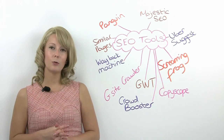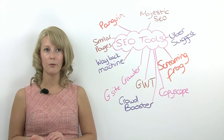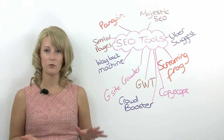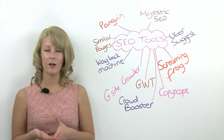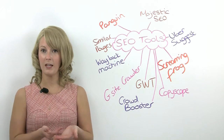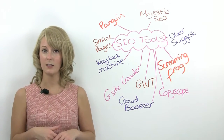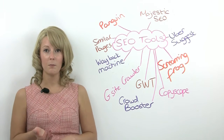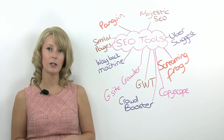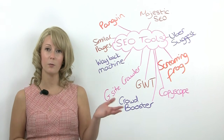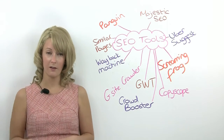Wayback Machine — this is a really cool tool if you've got a site and, for example, conversions have dropped just before you took it on. You need to think: has something on-page changed, but you don't know what the site looked like previously. You can use the Wayback Machine to look at a cached version of the site so you can see what it looked like previously and decipher whether something's changed which caused the drop in conversions.